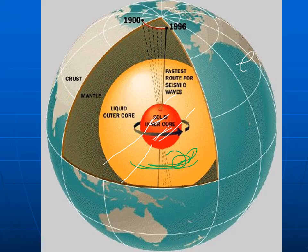It's the tidal forces of the Moon pulling on Earth that are slowing the rotation of the outer part of the Earth. If the Moon were not there, it is possible Earth's magnetic field would be weaker than it currently is. That magnetic field protects us from a lot of radiation from space, so it's very important that it be as strong as it is.